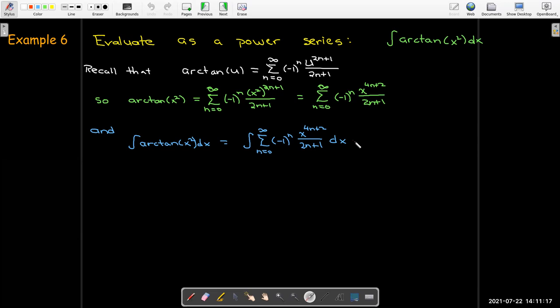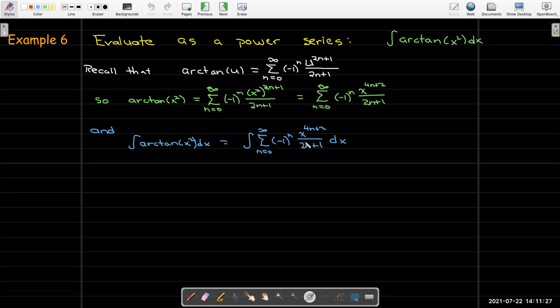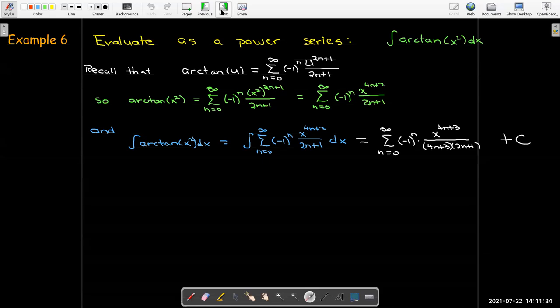So I made a mistake here. Let me go ahead and work this out then. Power rule would say that I'm going to add 1. Let me just see if I did that. I did. Okay, so I didn't make a mistake. That's nice. Add 1. I get 4n plus 3 divided by the 4n plus 3. And then, of course, have a constant of integration.